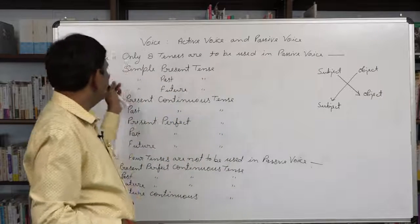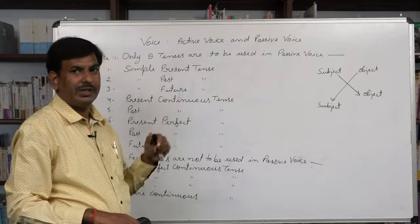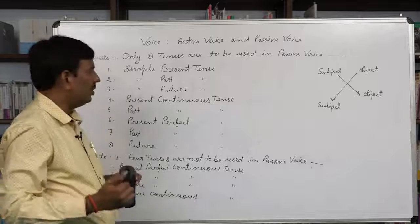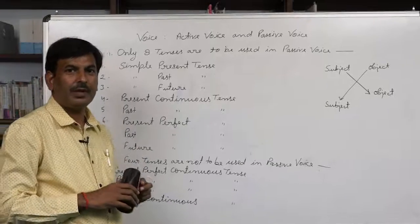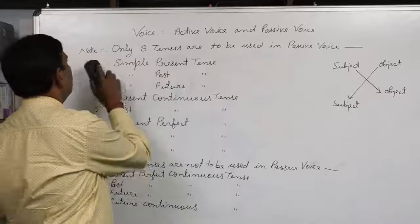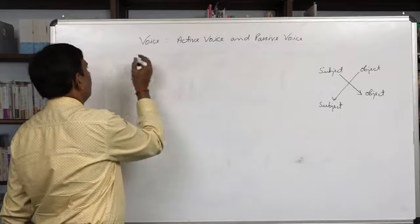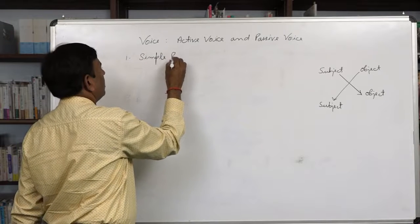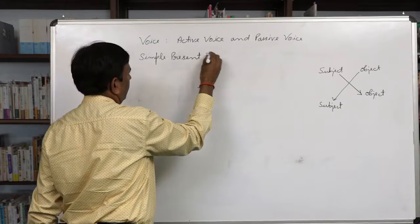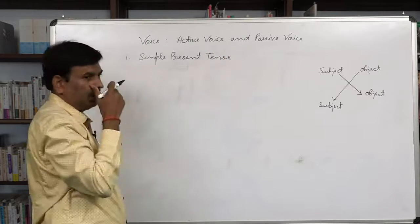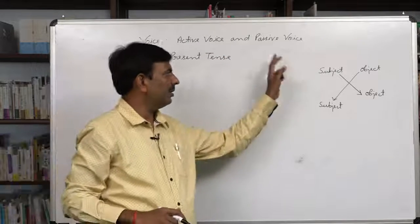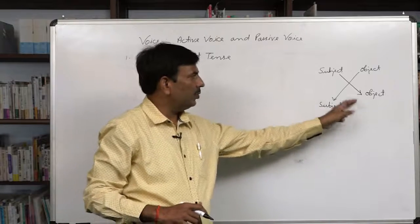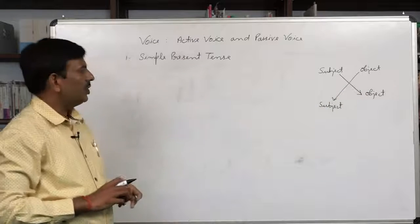Now let us take the first tense: simple present tense. As I have said, in all eight kinds of passive voice, subject into object and object into subject — this rule is to be followed. The first rule is number one: affirmative, also known as positive. I would like to add some abbreviations: S for subject, O for object, and V for verb.